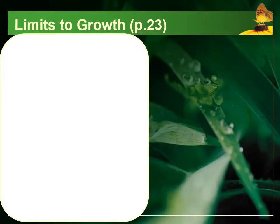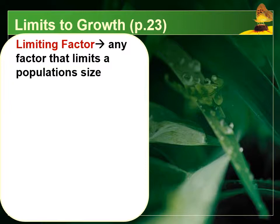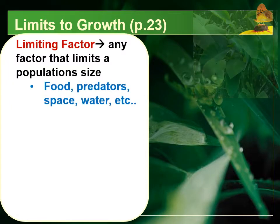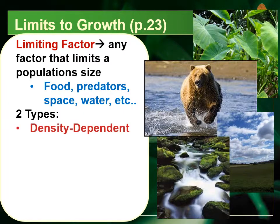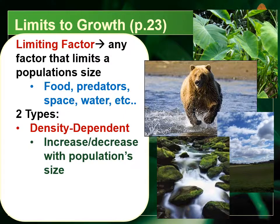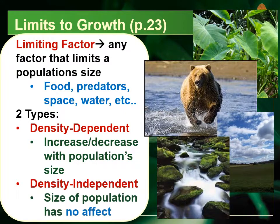Now we want to discuss very specific categories of limiting factors. A limiting factor is any part of the environment — biotic or abiotic — that limits the size a population can grow to. This includes food, predators, space, and water. There are two types: density dependent factors, where the effect of the limiting factor increases or decreases as population size increases or decreases; and density independent factors, where the effect is the same regardless of whether the population is big or small.